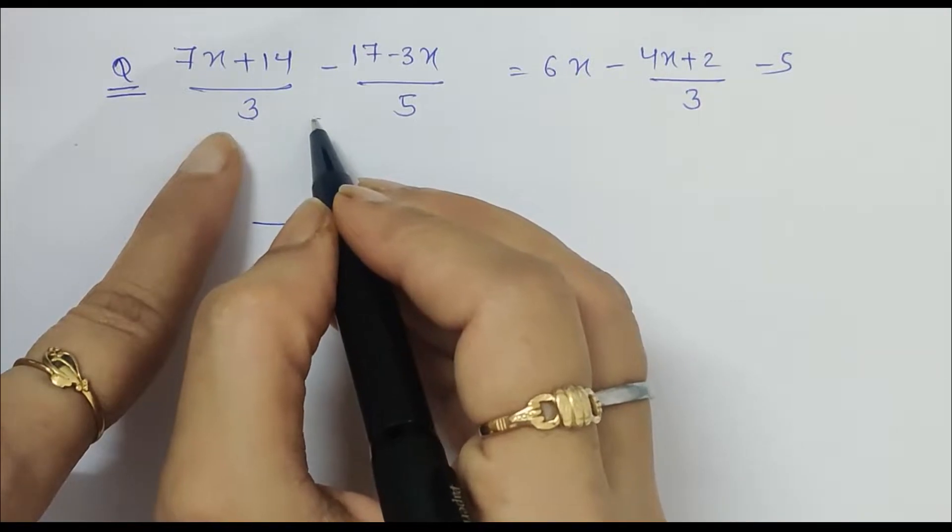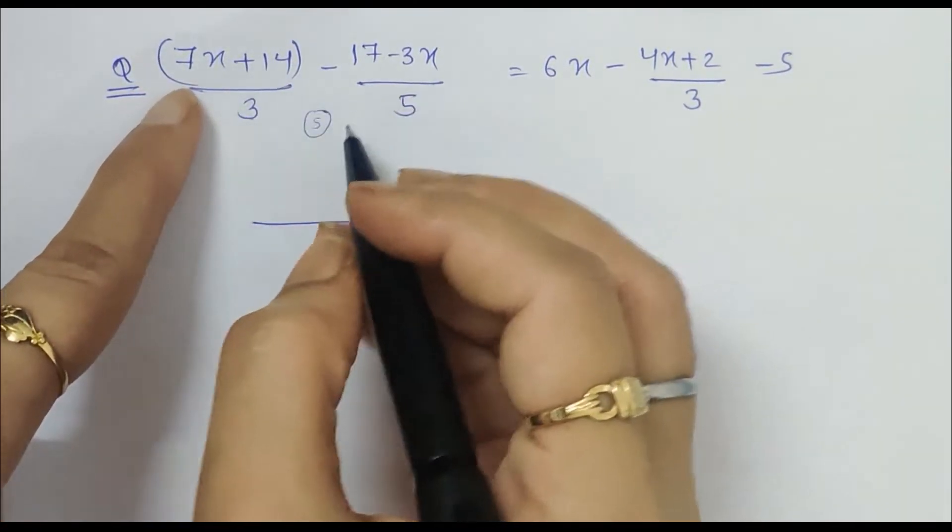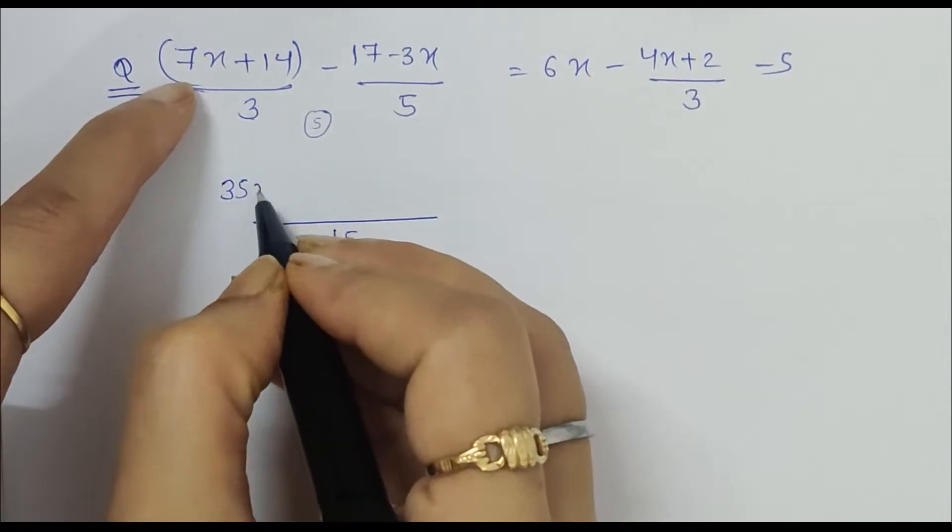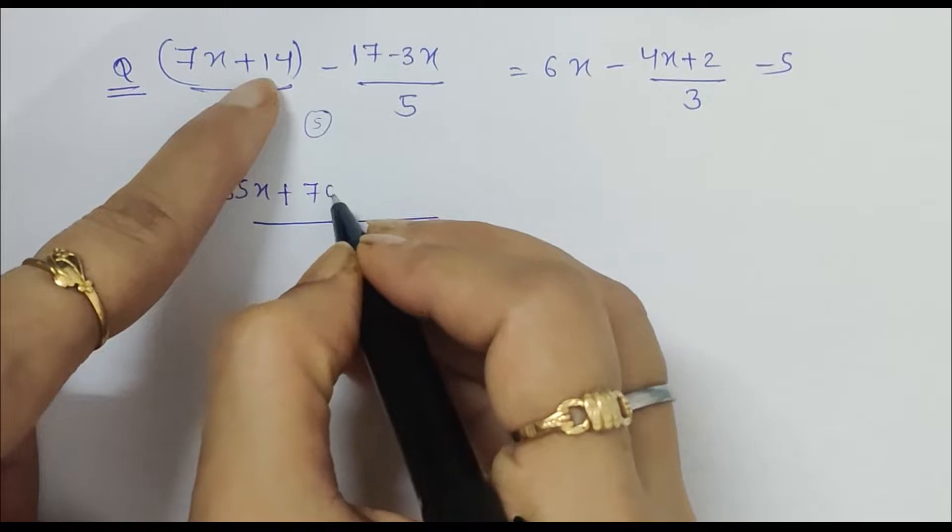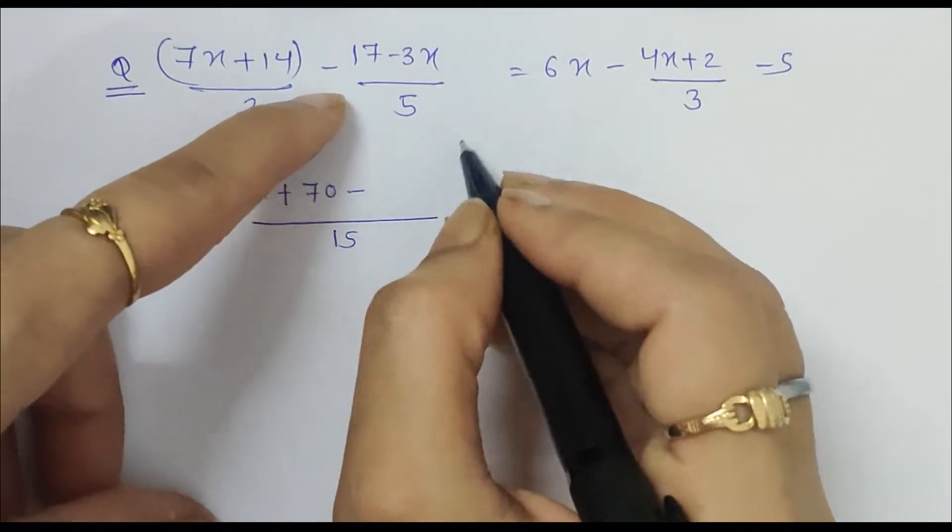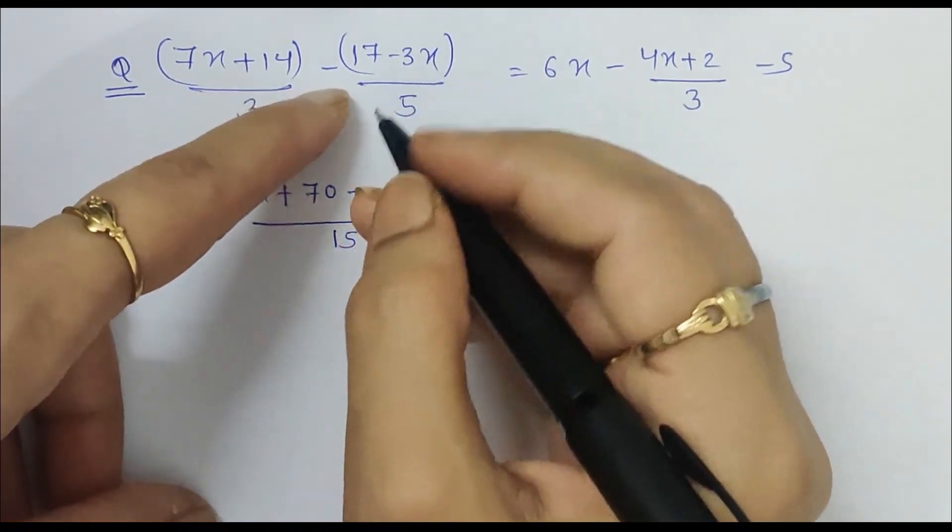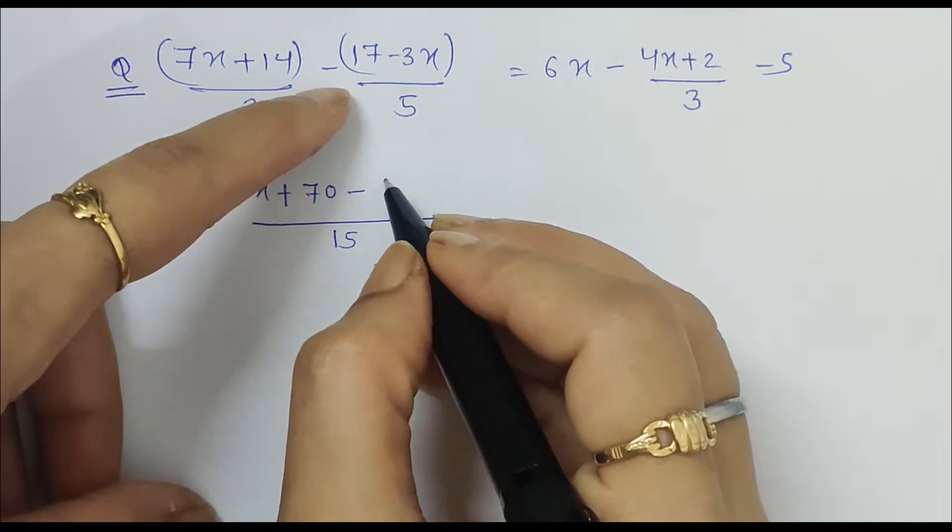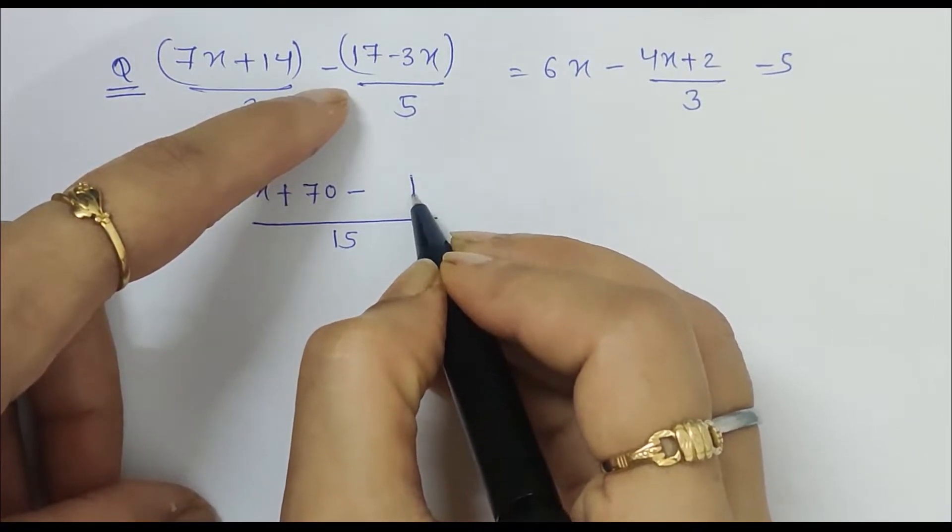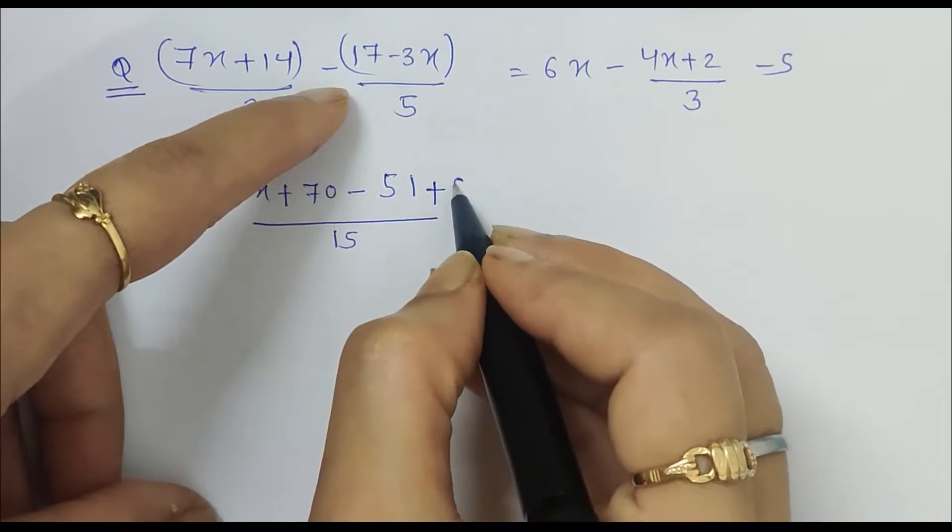Now 3 times 5 is 15. Keep 5 in mind and multiply it with the numerator. So 5 times 7 is 35x, plus 14 times 5 is 70, minus 5. 3 is 15, so that 3 which is in mind gets multiplied with the things in the numerator. So 17 times 3, that's 51, plus 3 times 3 is 9x.